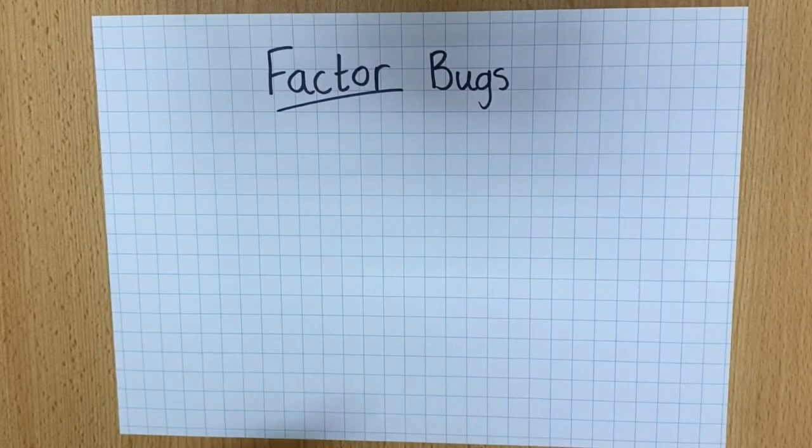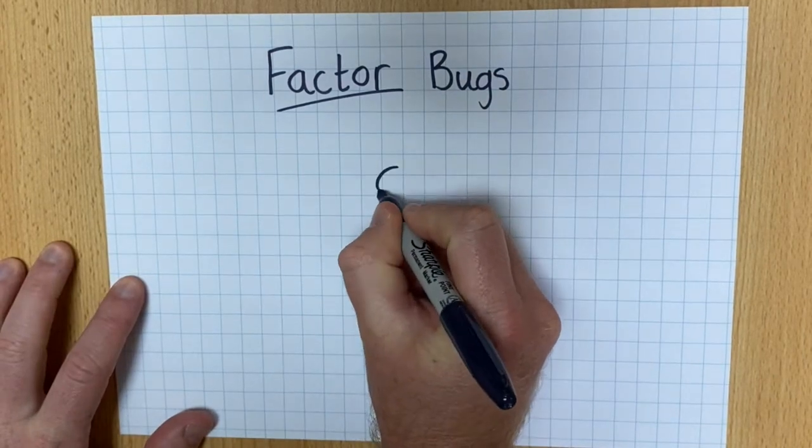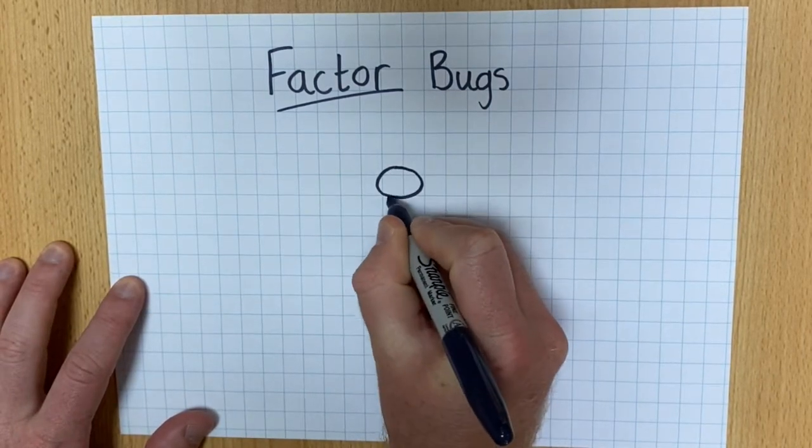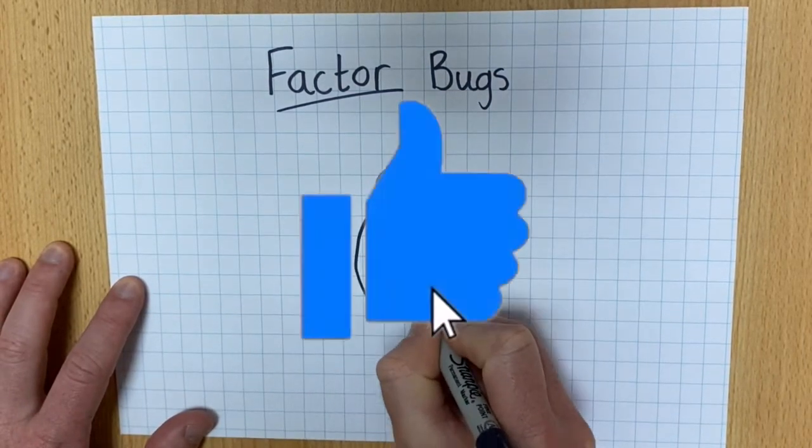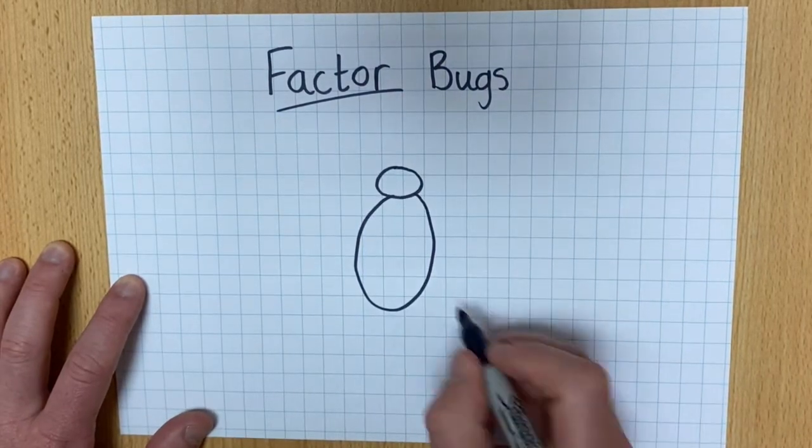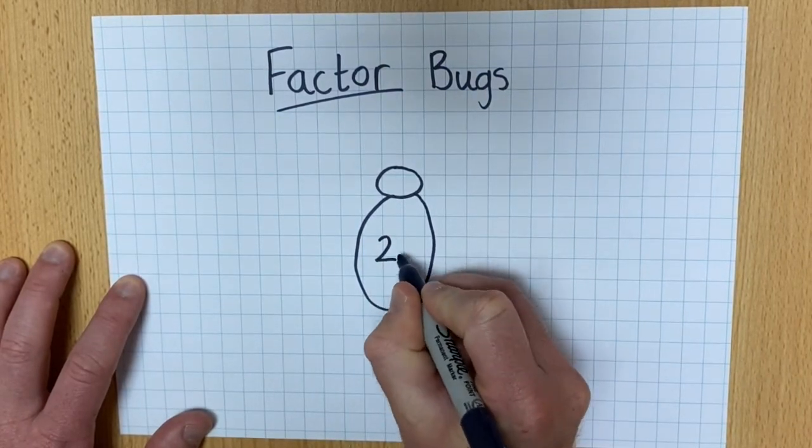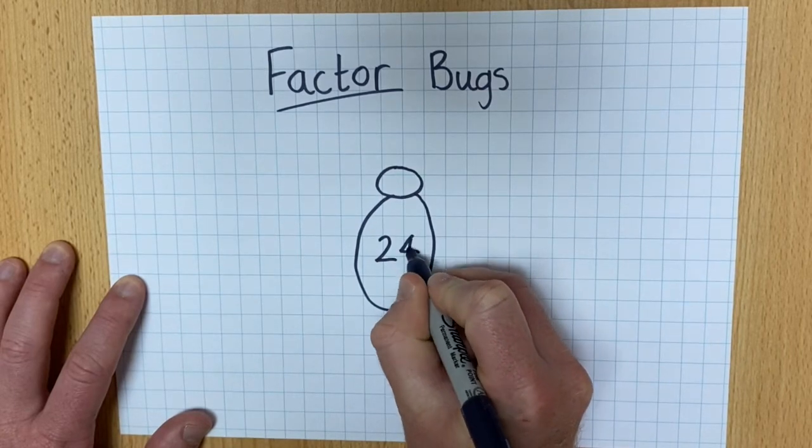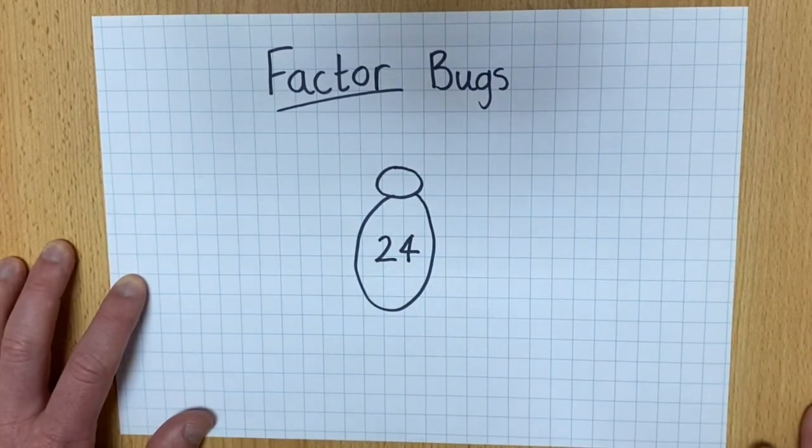So to make a factor bug you need to start by drawing a small head and a big body. Then you write the product or the number that you want to find the factors for in the middle of the body.